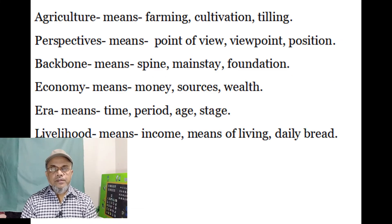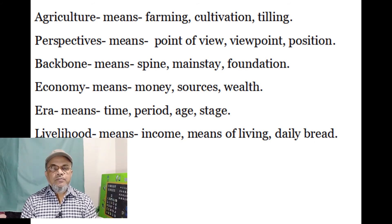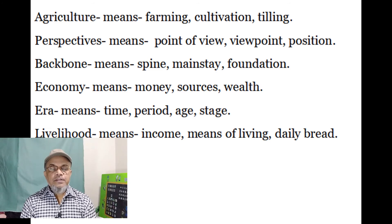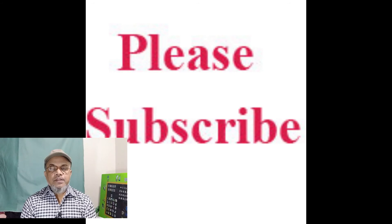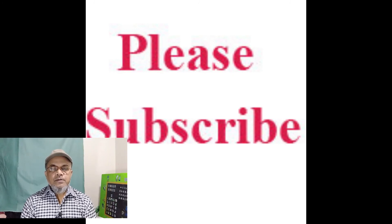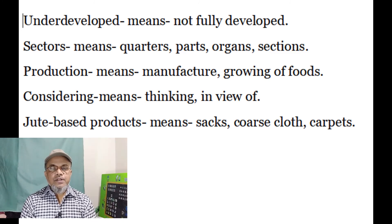Some vocabulary: Agriculture means farming, cultivation, tilling. Perspective means point of view. Backbone means spine, mainstay, foundation. Economy means money sources and resources. Era means time period. Livelihood means income or means of living. Underdeveloped means not fully developed. Sectors means parts or sections. Production means manufacturing or growing of foods. Jute-based products include sacks, coarse cloth, carpets, and bags.